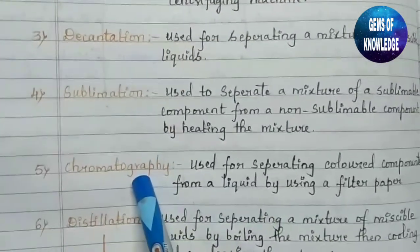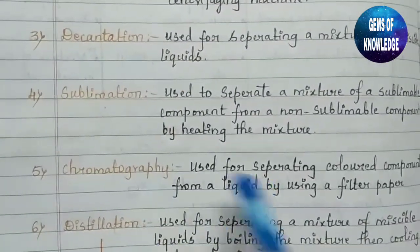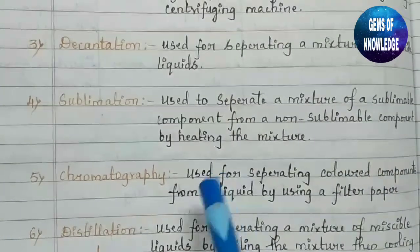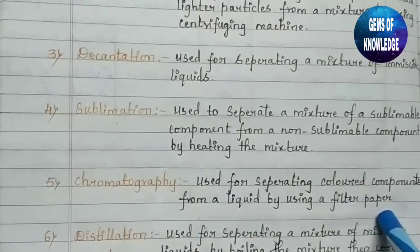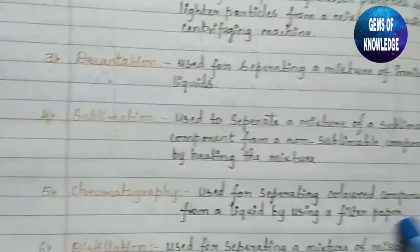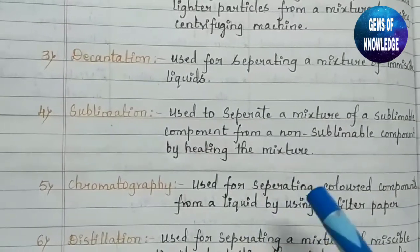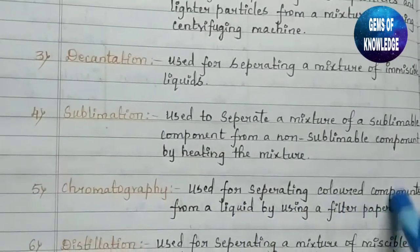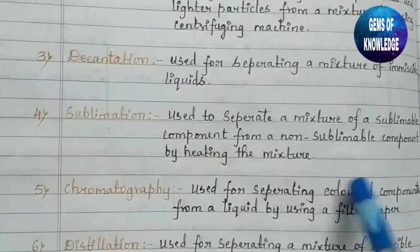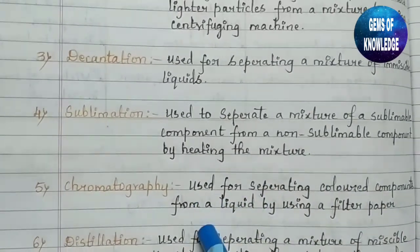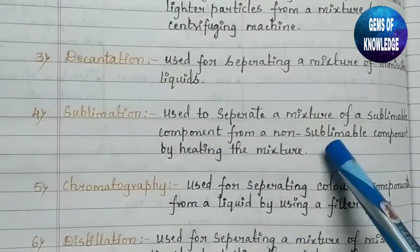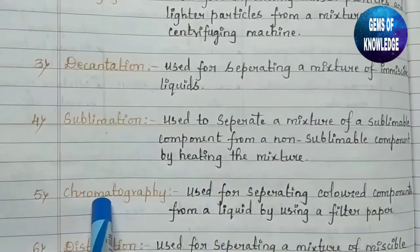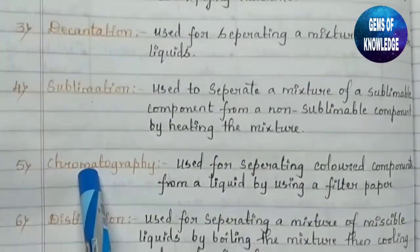The fifth technique is chromatography. It is used for separating colored components from a liquid by using a filter paper. From one particular liquid we can separate different colored components, and that process is done by the technique of chromatography.